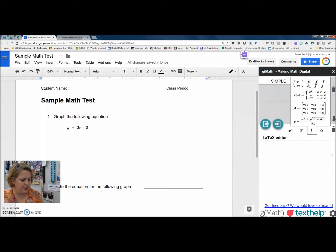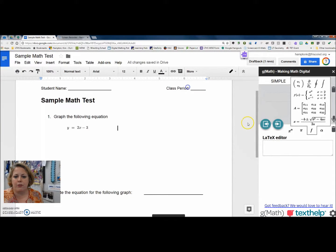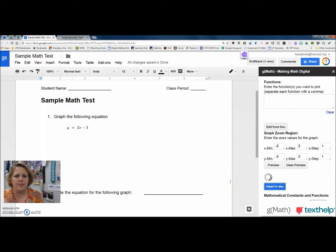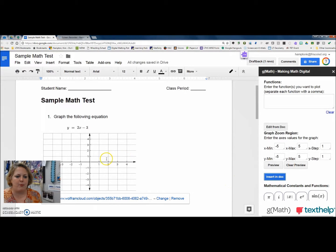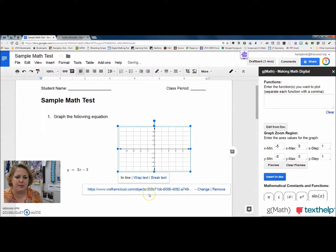Now, I'm going to put a piece of graph paper in here for my students to use. So I'm going to go back to add-ons, GMath, create a graph. And because I want blank paper, I'm just going to clear out everything in the function box. I think I will adjust my window here just a little bit, just like I would on a graphing calculator. And I'm going to say insert in doc. And it's going to pull that little piece of graph paper right over.